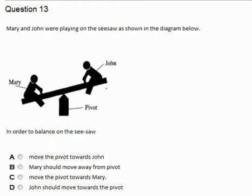As shown in the diagram below, in order to balance on the seesaw, you need to state what should be done so that the seesaw can balance. According to what we can observe here, Mary is heavier than John, and that is why Mary is already down and John has been lifted up.